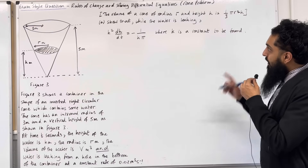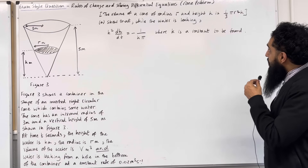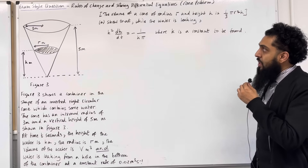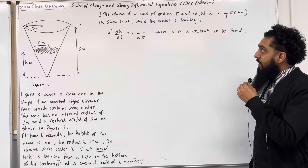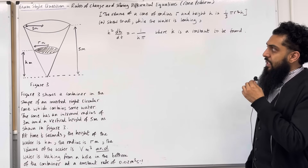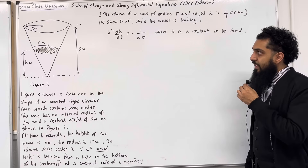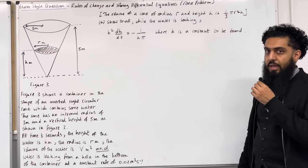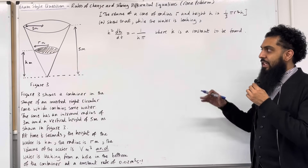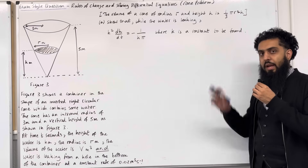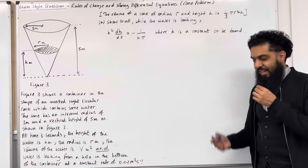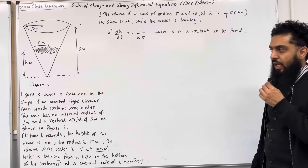The volume of a cone of radius r and height h is one-third π r² h. Part A: show that while the water is leaking, h² dh/dt is equal to minus 1 over kπ, where k is a constant to be found. Please pause the video, have a go at Part A, and then play the video to see the solution.